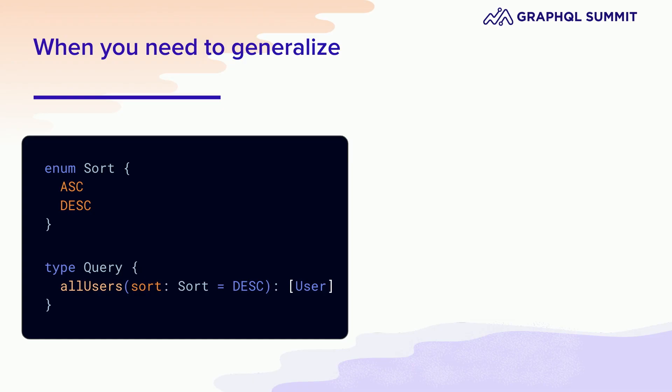I've painted general queries and mutations in a bad light — I don't mean to, because there are valid use cases for this. It's just that a lot of times there are unintended consequences when we do it. But when you do need to generalize, there are some tips. If you're going to generalize a query, it's a really good idea to take advantage of default parameters. You get the benefits of required because you can rely on a value, and you can also document what the default behavior is while allowing clients to override that.